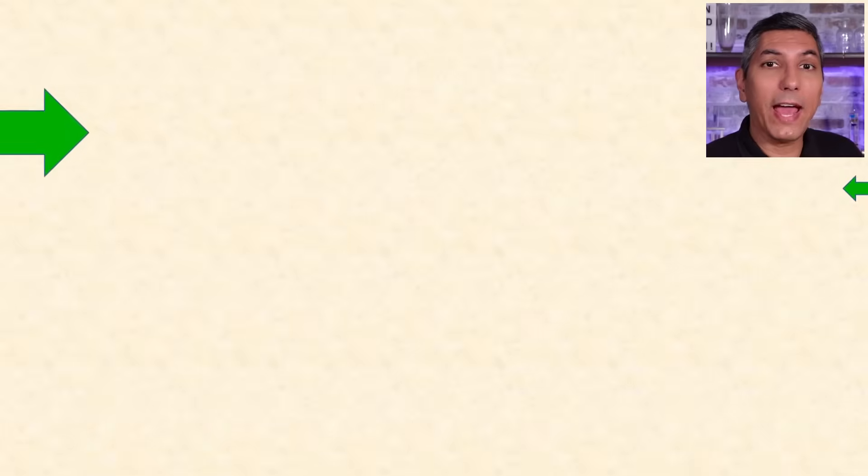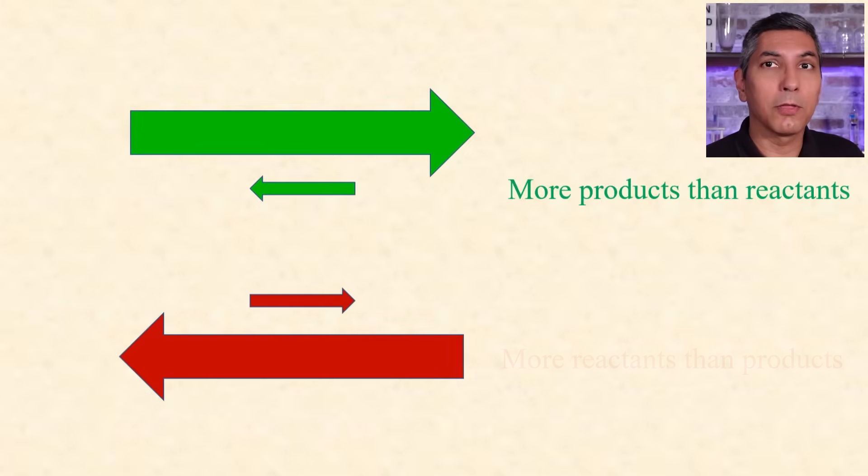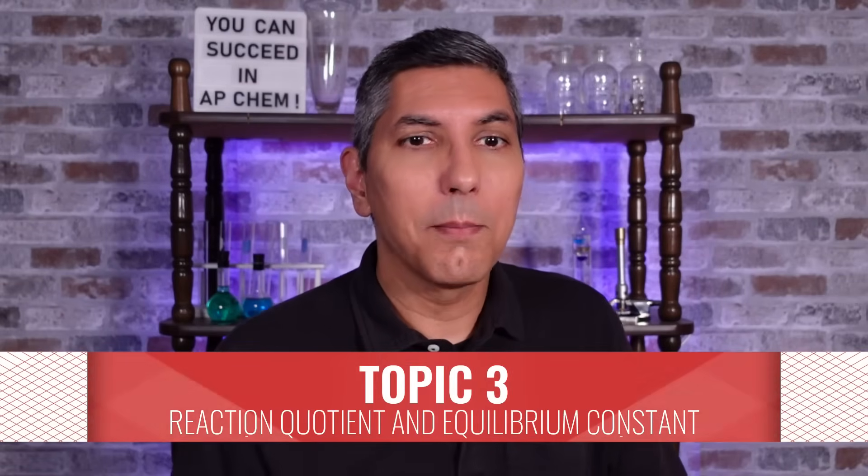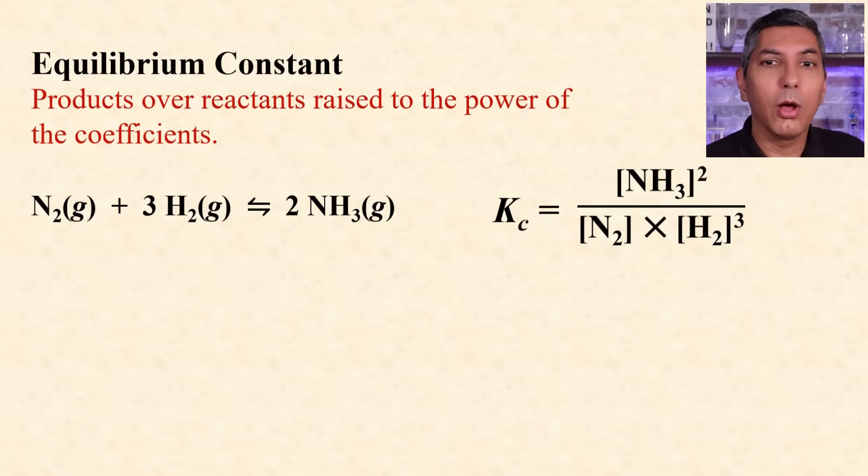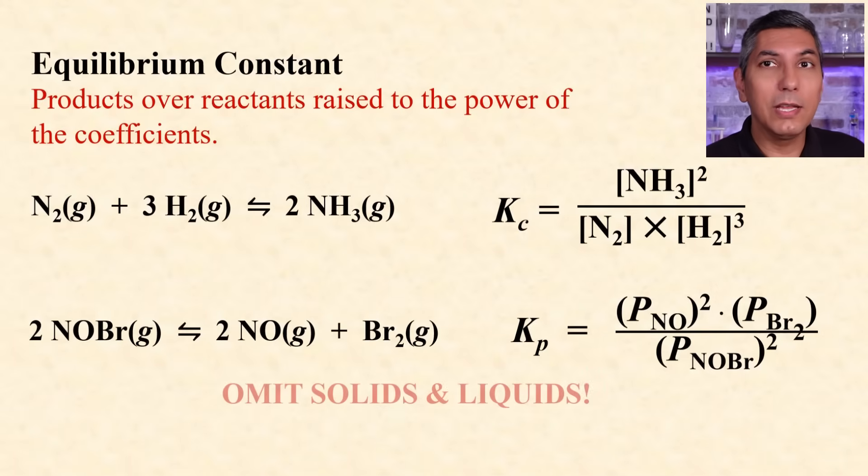The direction in which equilibrium will lie has to do with relative rates of the forward and reverse reactions. If the forward reaction is faster than the reverse reaction, then you'll end up with more products than reactants. On the other hand, if the reverse reaction is faster, you'll end up with more reactants and relatively little conversion to products. We write the equilibrium constant expression for any reaction by making the equilibrium constant, Kc, equal to the concentration of the products over the reactants, all raised to the power of the coefficients, just like we see here. For Kp, it's the partial pressure of the products over the reactants raised to the power of the coefficients. In all cases, we leave out any solids or pure liquids from equilibrium calculations.